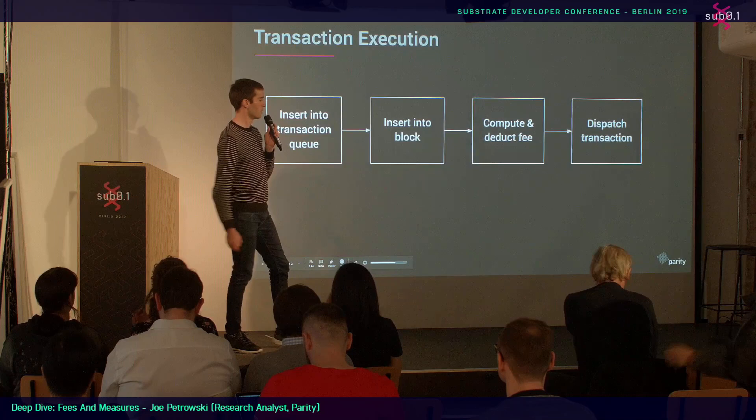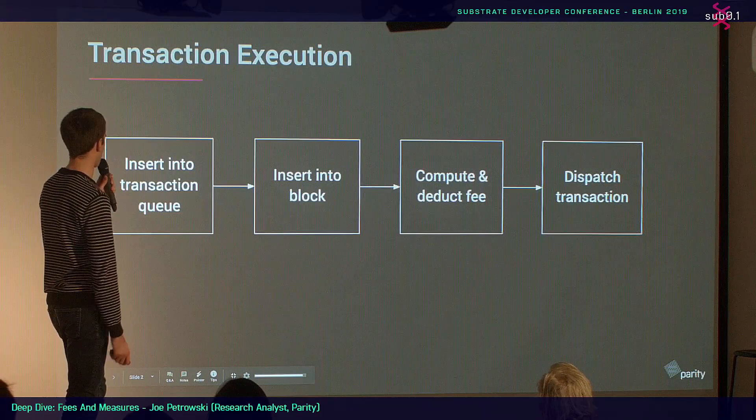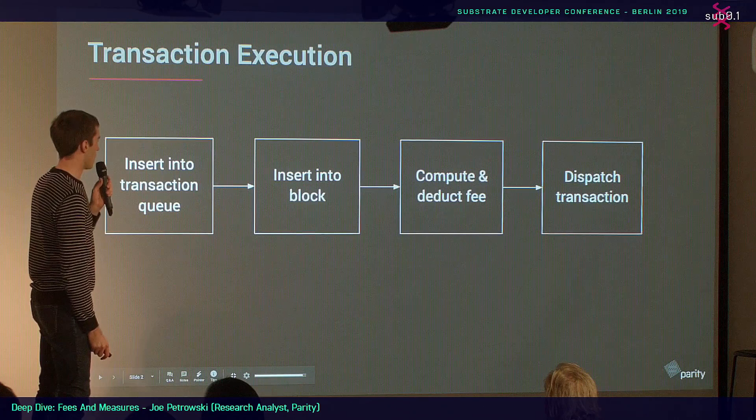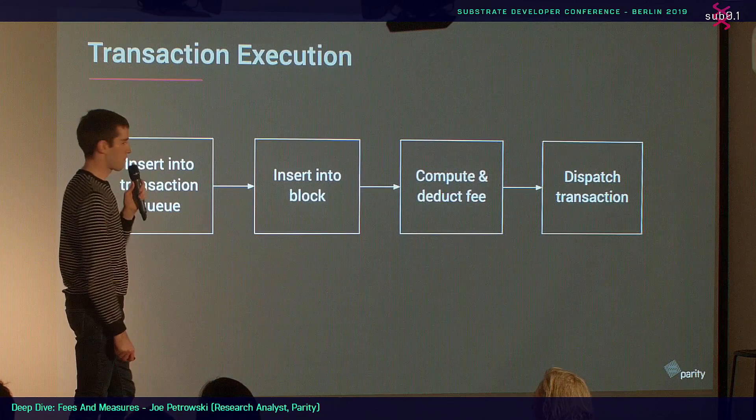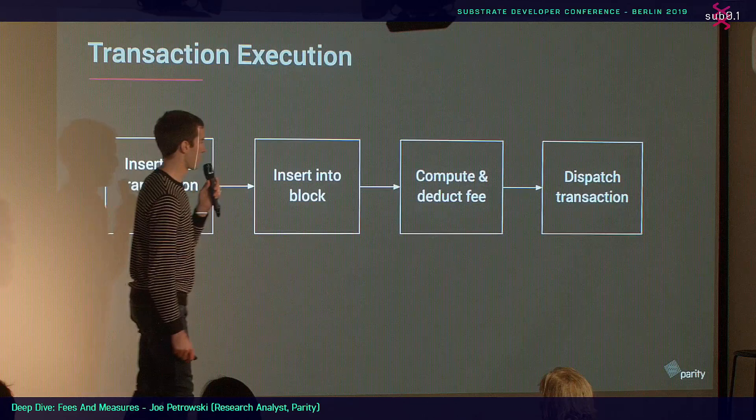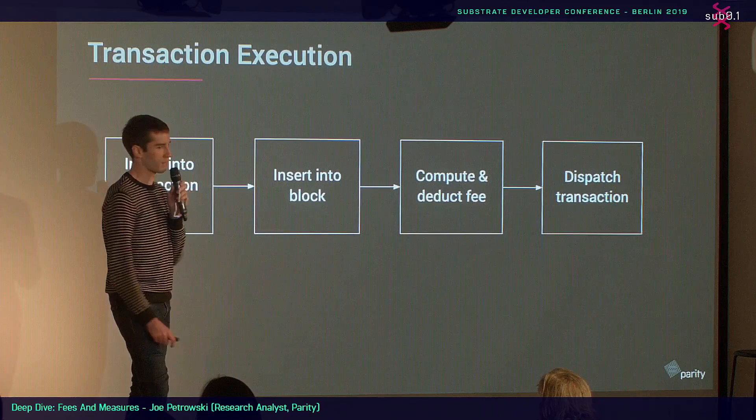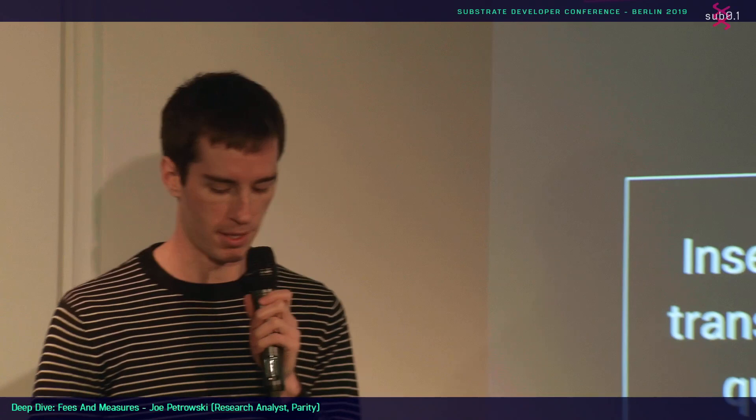So where do fees come in? With transaction execution, when you submit a transaction over an RPC, it goes into the transaction queue. It passes some checks, and if it passes those checks, it gets inserted into a block. That's where the fee gets computed — it computes the fees, deducts from the sender's account, and then if that passes, it dispatches the transaction. This is very different from gas metering, where execution starts and may run out of gas mid-transaction. Here, the whole fee computation happens before dispatching.